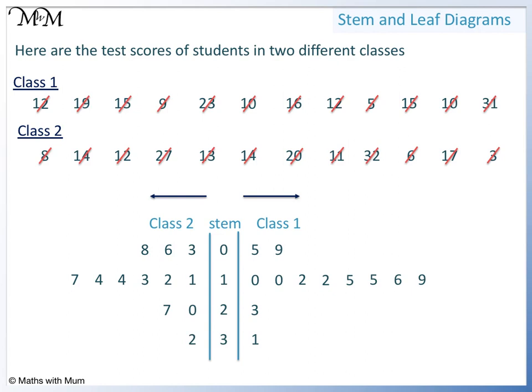We have crossed off all values, so we have finished. We now add a key. To make a key, we just pick any example and explain it. For example, 1 slash 2 equals 12. You can pick any value for your key.